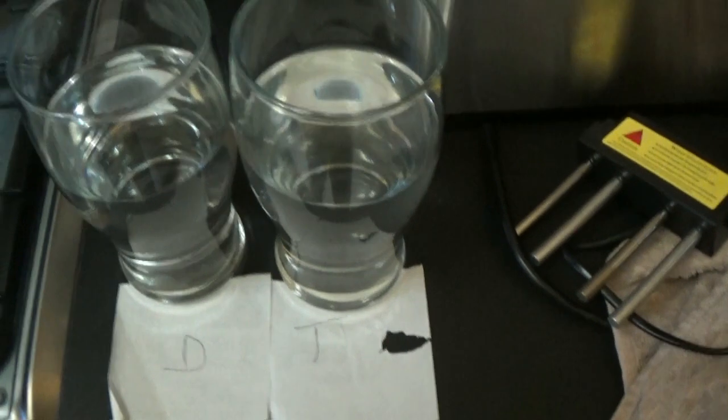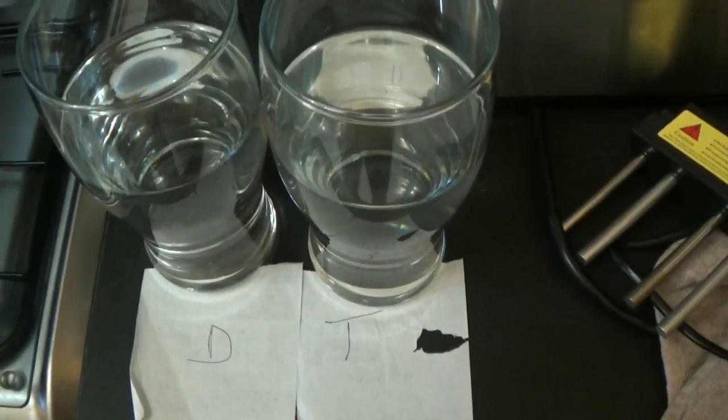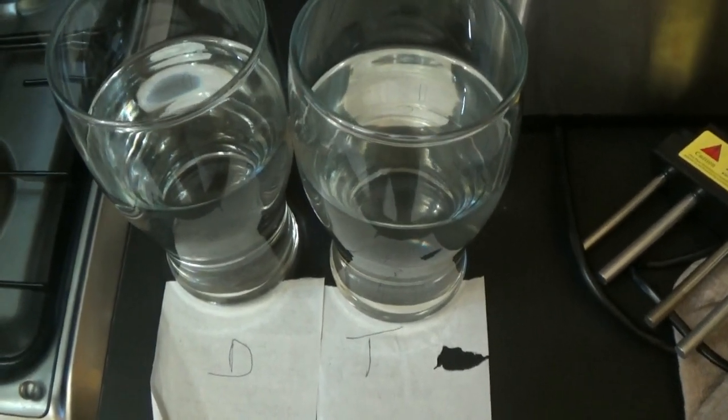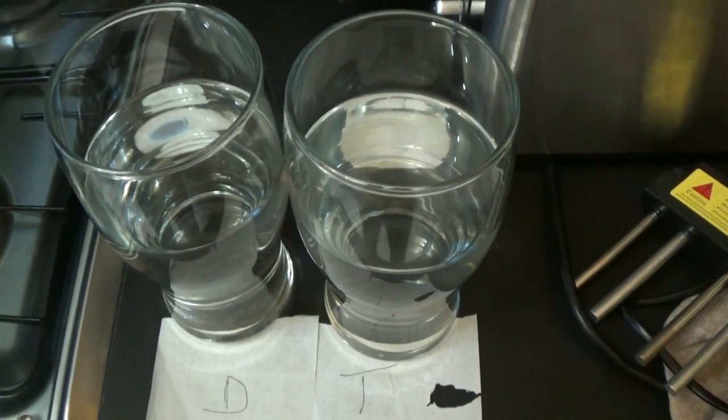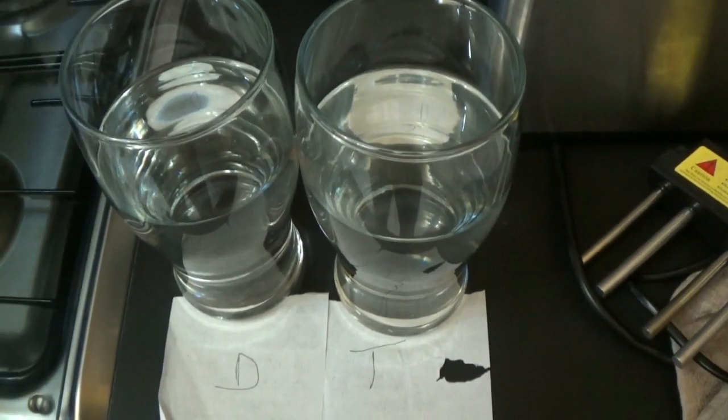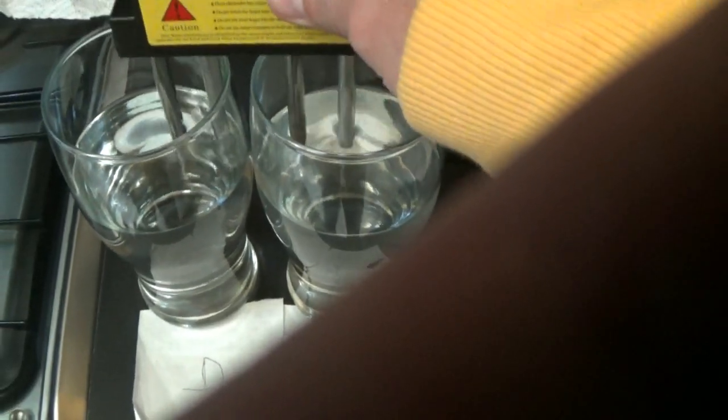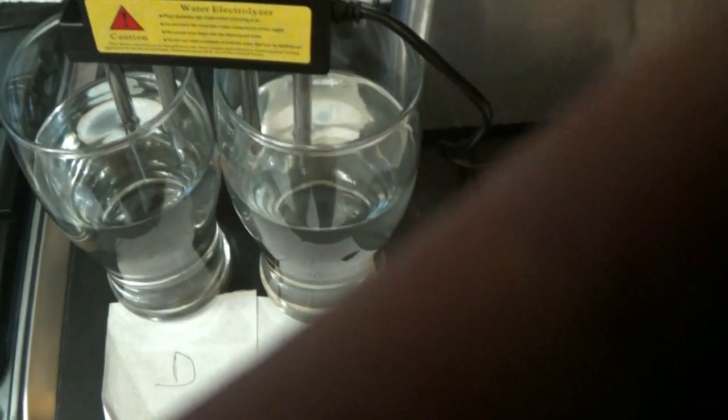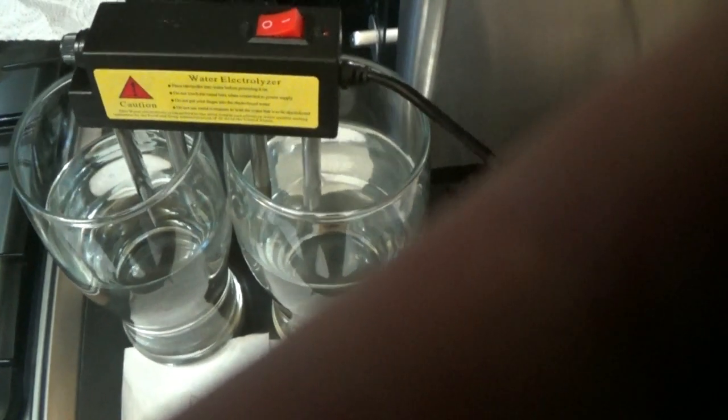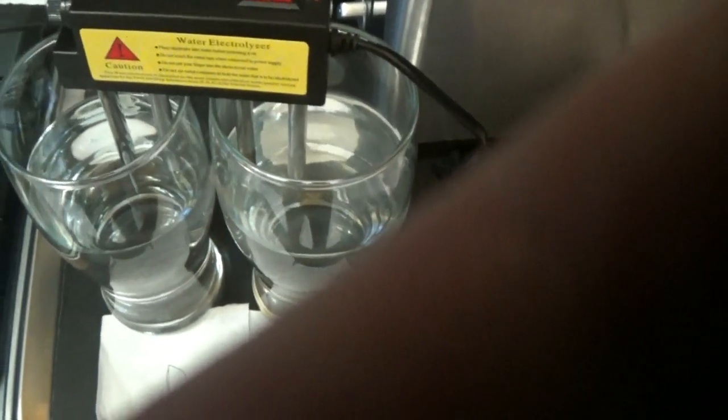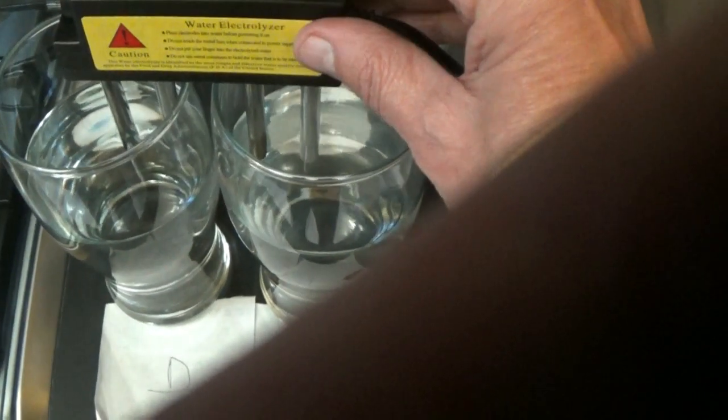So there's two glasses of water here. The one on the left is my distilled water from my distiller and the one on the right is tap water. I'm going to immerse the electrolyzer equally in both of them, switch it on at the mains and then switch this switch here.